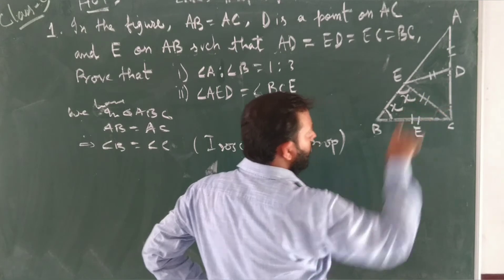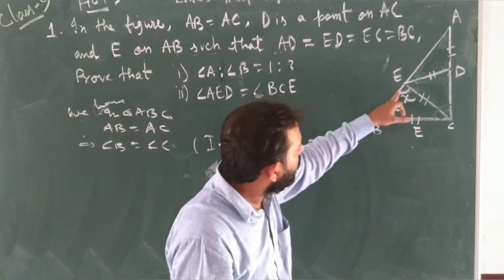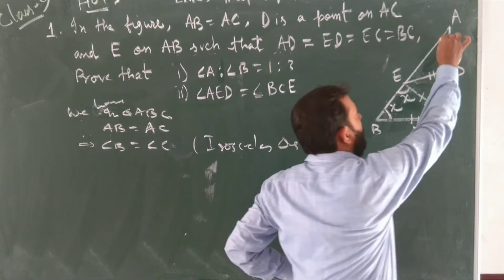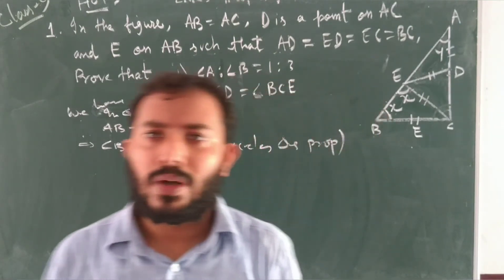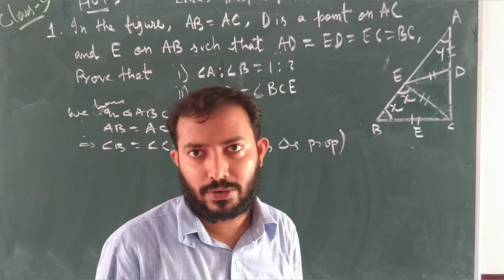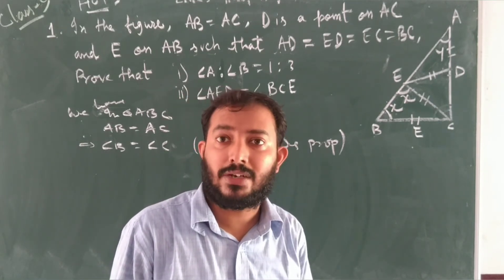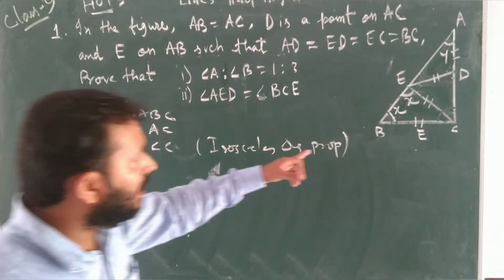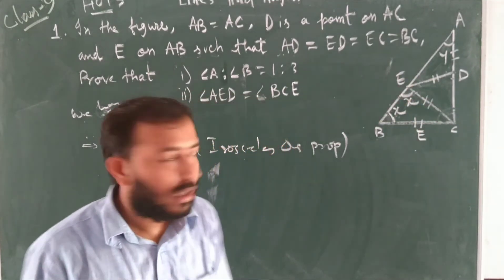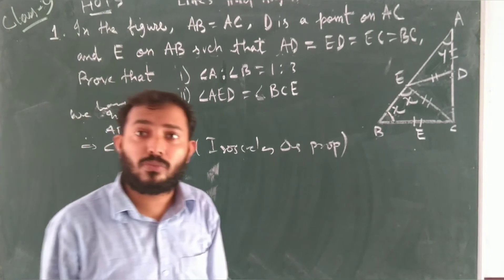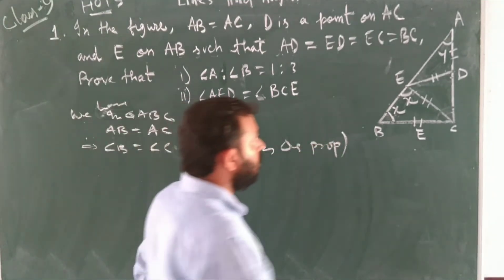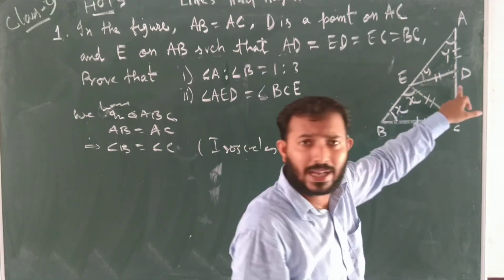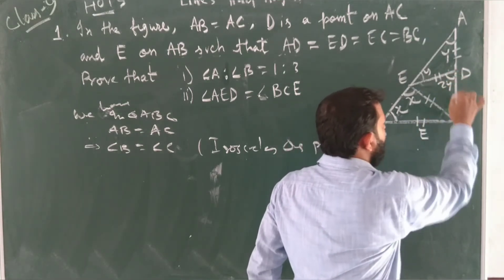If we take angle A as Y, then by the isosceles triangle property, this angle is also Y. You can see that by the exterior angle property, this angle is also equal to Y, and this one must also equal Y. Now look at triangle AEC — X is the exterior angle of triangle AEC, so the exterior angle property will apply.